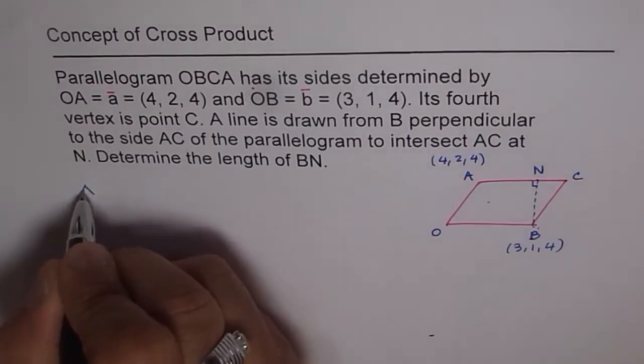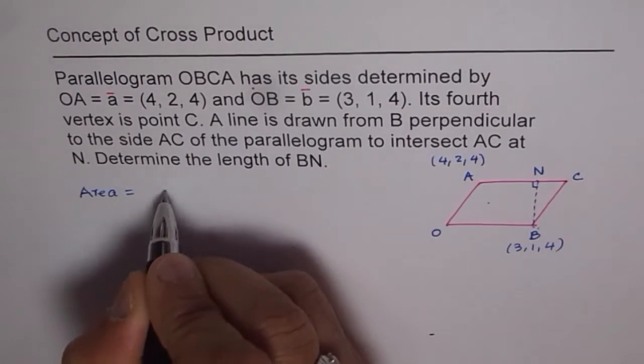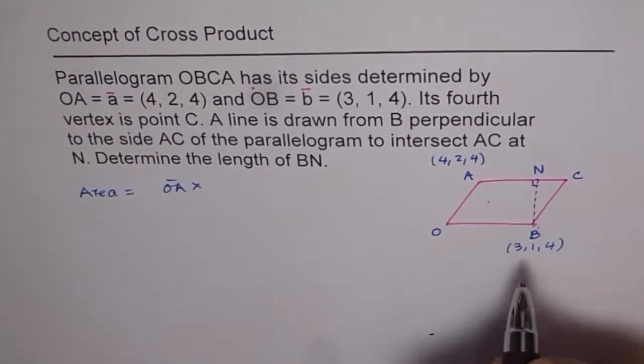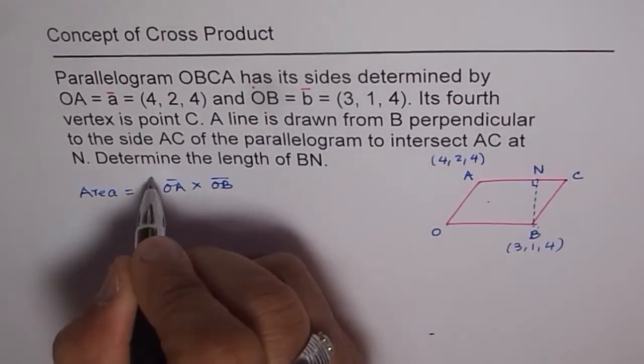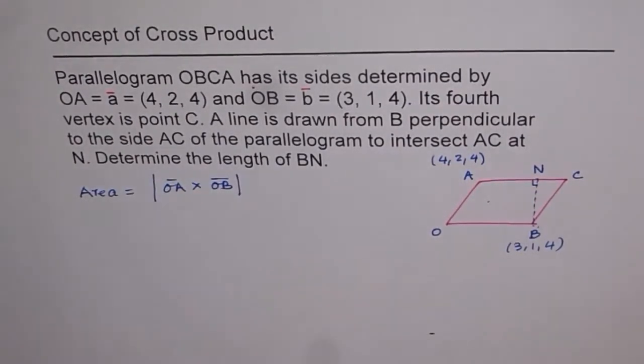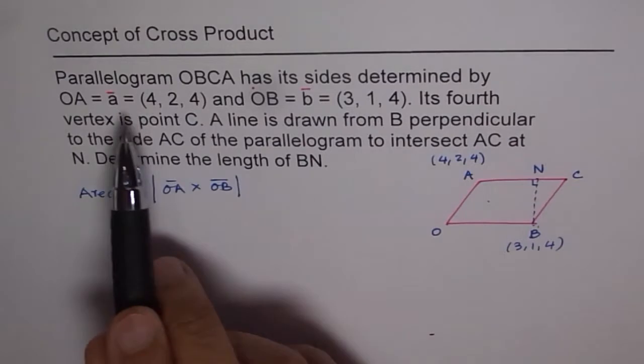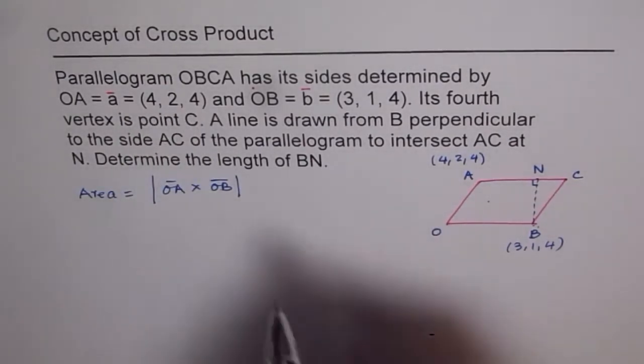So let's first find area of the parallelogram. Area of parallelogram is OA cross OB. The magnitude of this will give us the area of parallelogram. So let's calculate this first. Now, what is OA? OA is (4, 2, 4).